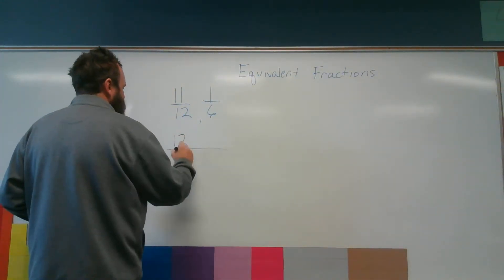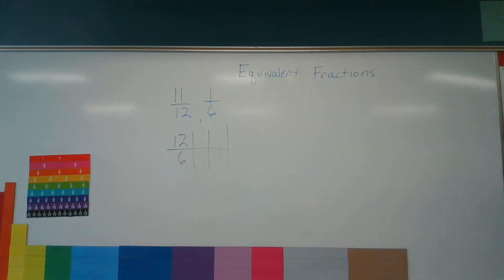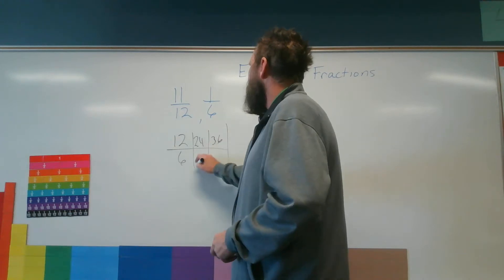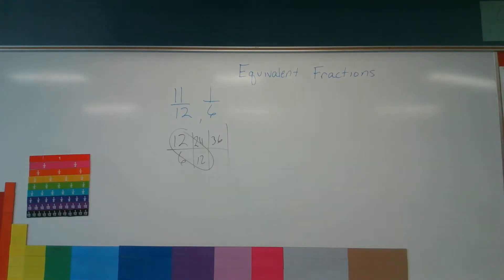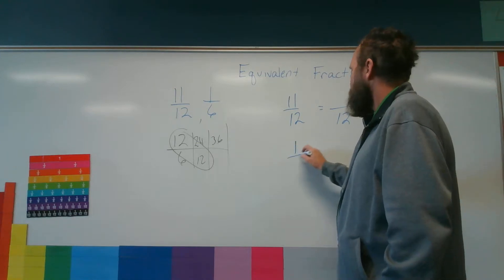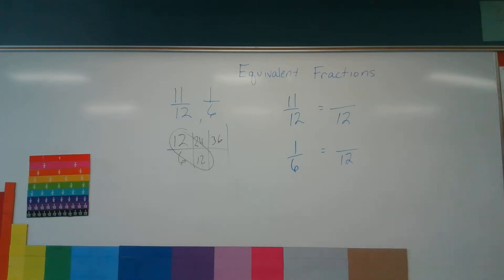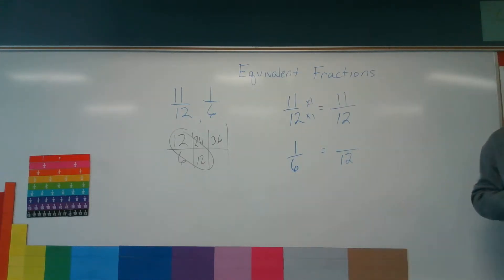We need to find the common denominator. So I take my two denominators and list the multiples, or I look at the multiplication chart. If I take 12, 24, 36... then 6, 12 — boom. 12 is my common denominator. Once I know what my common denominator is, I change them so they're both over that common denominator. Since 11 twelfths is already over 12, I would just multiply it by 1 and it stays 11 twelfths.